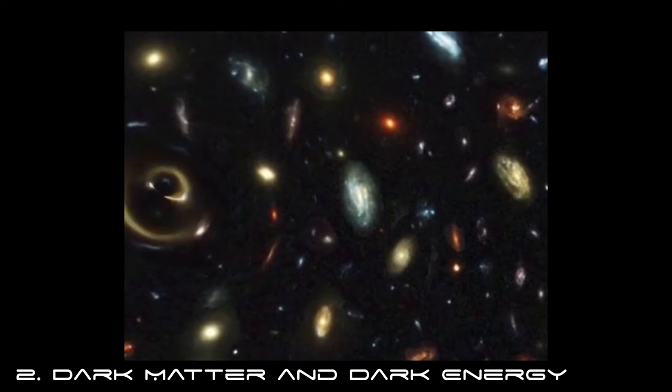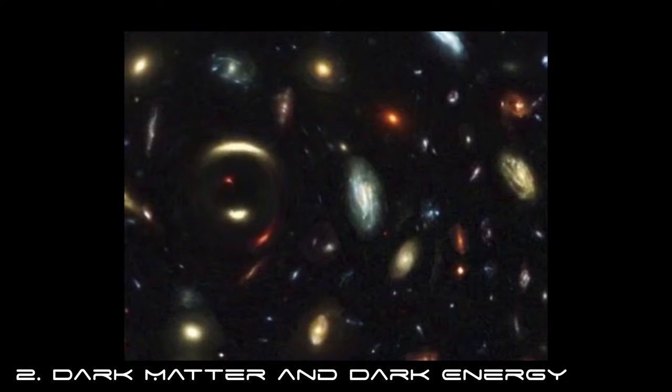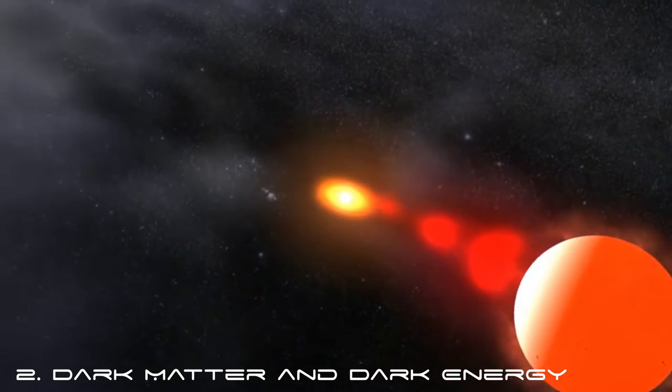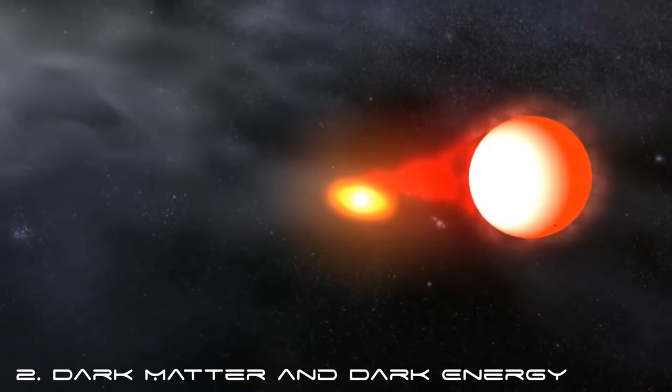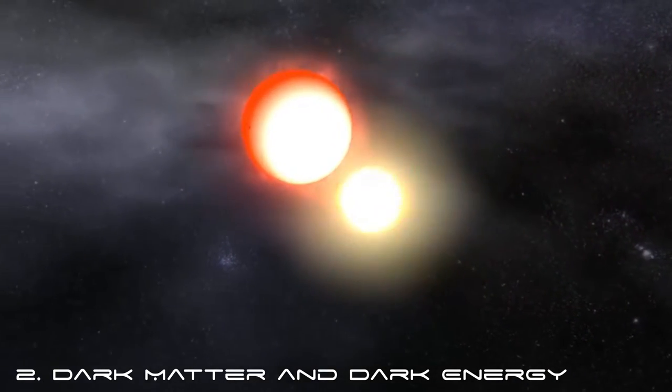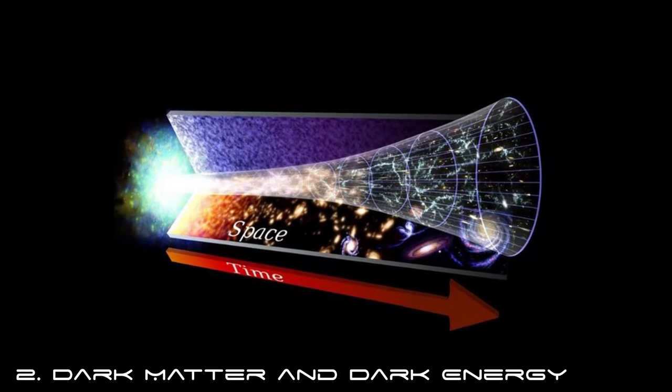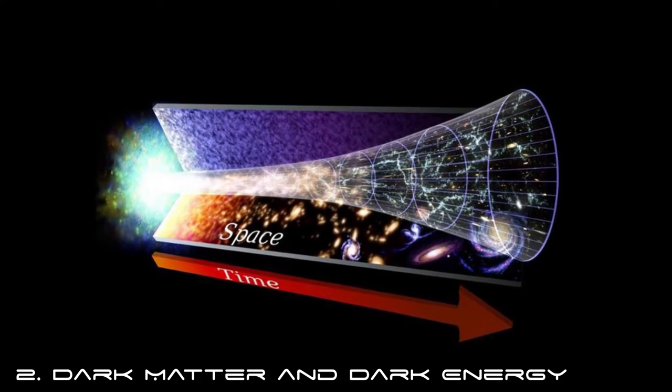For example, gravitational lensing is one of the best ways to study dark matter, and standard candles such as type 1a supernovae can be used to study universe expansion which is connected to dark energy. Having all this data on these different astronomical events will help provide more insight as to how dark energy and dark matter influence our universe.